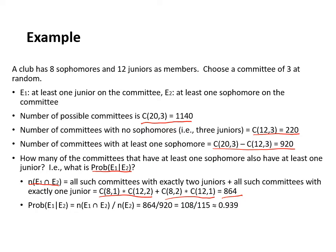Then the probability we want to calculate is 864 divided by 920 — this is n(e2) which is 920 — and that is equal to 0.939. This example illustrates how to compute conditional probability using counting.